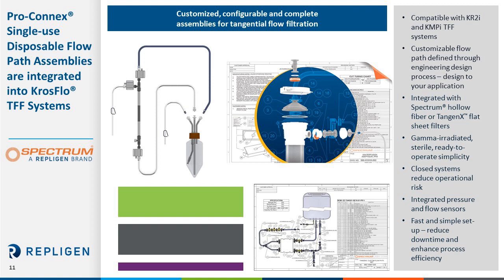Repligen offers single-use filter assemblies that are fully compatible and optimized for use on the KR2i and KMPI TFF systems. These flow paths are fully customizable and defined through an engineering design process for your particular application. Assemblies include a filter, configurable tubing sets, and integrated sensors, and can be designed with both Spectrum hollow fibers or Tangenix flat sheet cassettes. Repligen offers multiple chemistries of hollow fiber membranes allowing for fast processing with high flux rates. Tangenix flat sheet cassettes are available in two chemistries: ProStream low-binding and high-stream hydrophilic membranes. Proconnex flow paths can be gamma irradiated so they are sterile and ready to use upon delivery.